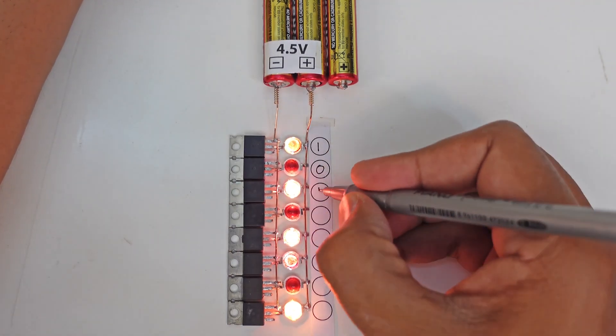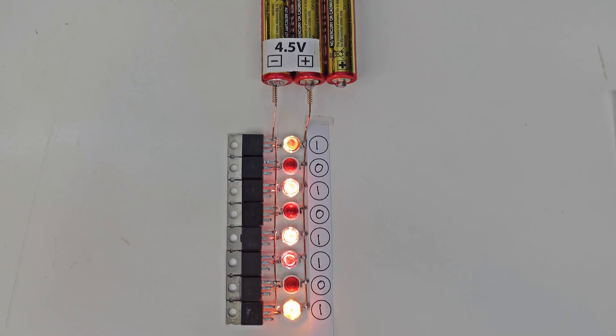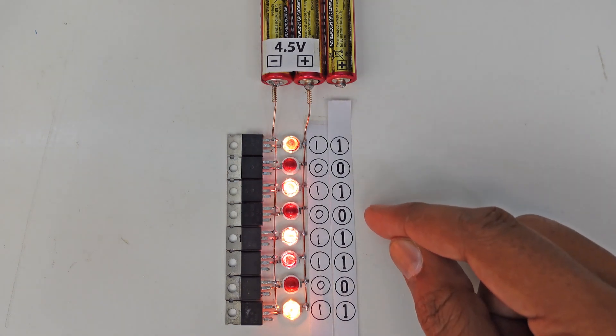We write ones and zeros according to switch status, on or off. We have retrieved our data from flash memory. Let's compare it with previous data. And when we compare it with the previous data, it is exactly the same data.